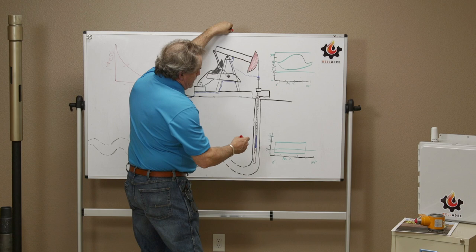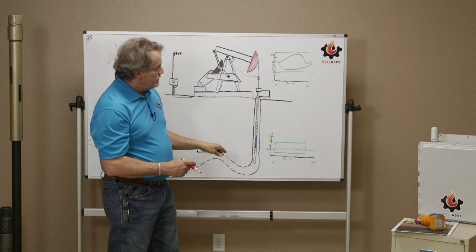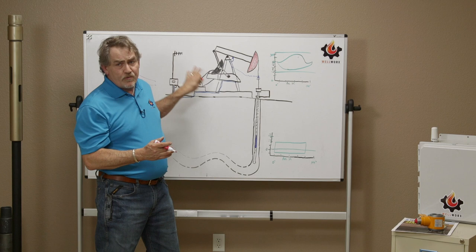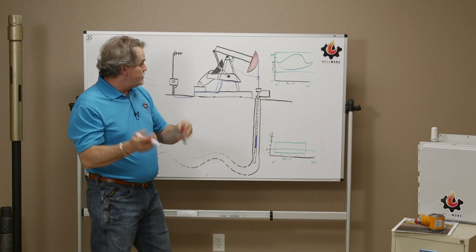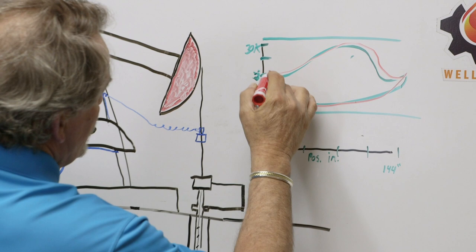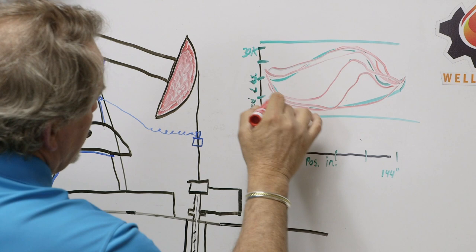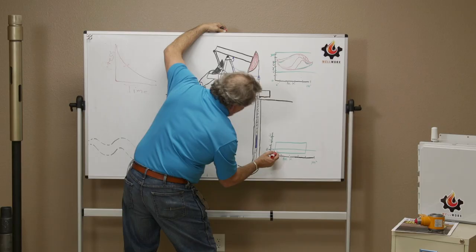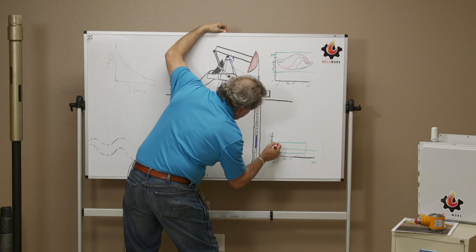Now, what would happen is if we had more pump capacity than we had reservoir inflow capacity. That means I can produce more with this system than the reservoir can flow into the system. And I'm going to see something like this start to happen at the surface. I'm going to introduce incomplete fillage. And I'm going to see this load start to go away.